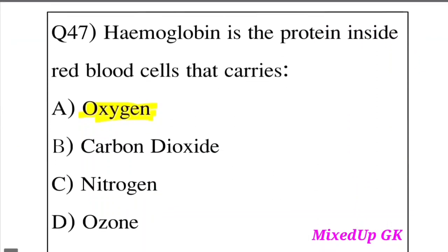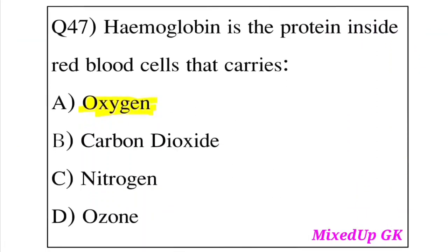Question 47: Hemoglobin is the protein inside red blood cells that carries which substance? Option A: Oxygen. Option B: Carbon dioxide. Option C: Nitrogen. Option D: Ozone. The answer is Option A, Oxygen. Hemoglobin carries oxygen.